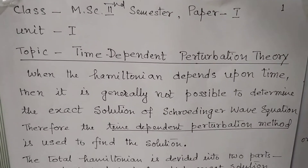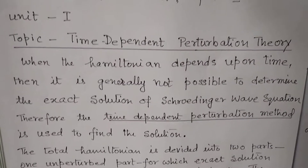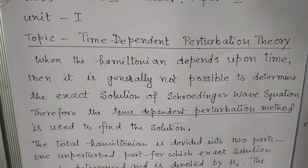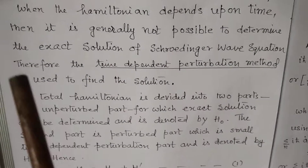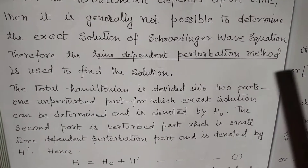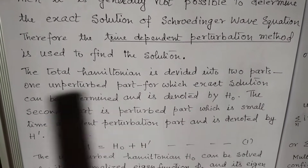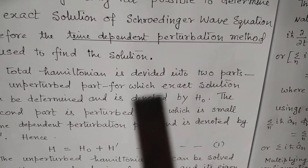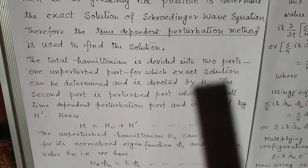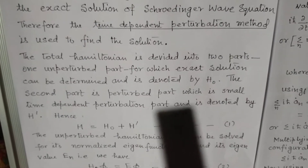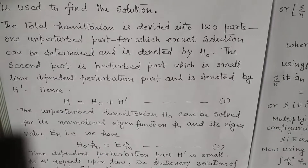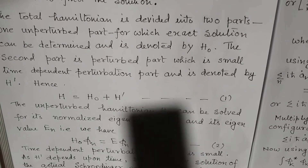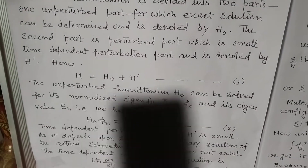Let us start with the topic. Time-Dependent Perturbation Theory: when the Hamiltonian depends upon time, then it is generally not possible to determine the exact solution of the Schrödinger wave equation. Therefore, the time-dependent perturbation method is used to find the solution. The total Hamiltonian is divided into two parts: one unperturbed part for which the exact solution can be determined, denoted by H₀, and the second part is the perturbed part, which is small and time-dependent, denoted by H'.